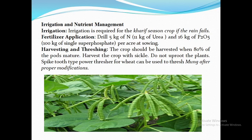Harvesting and Threshing: The crop should be harvested when 80% of the pods mature. Harvest the crop with a sickle. A spike-tooth type power thresher for wheat can be used to thresh mung bean after proper modifications. In case DAP is used for fertilizer application, omit nitrogen application. Apply potash fertilizer only when the soil test shows deficiency of potash.